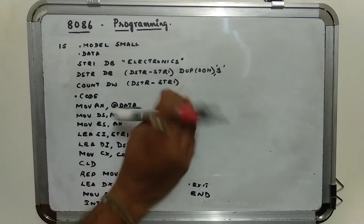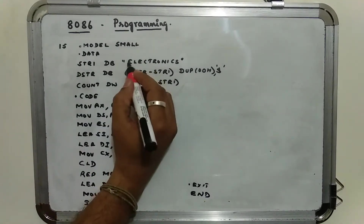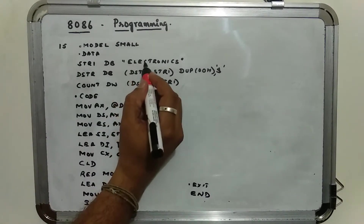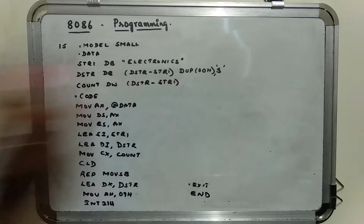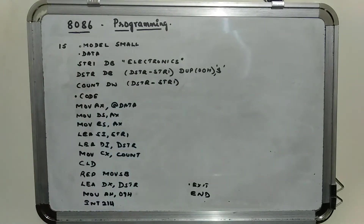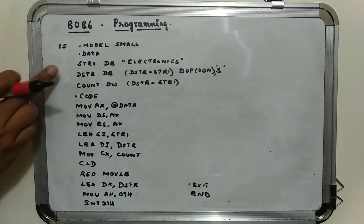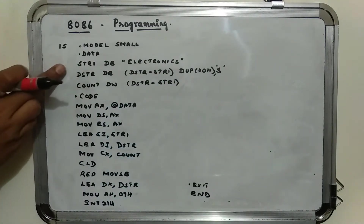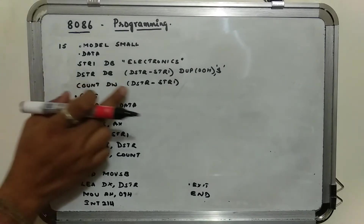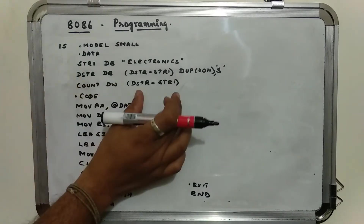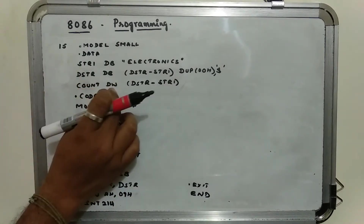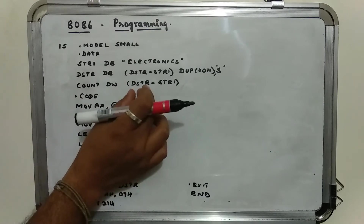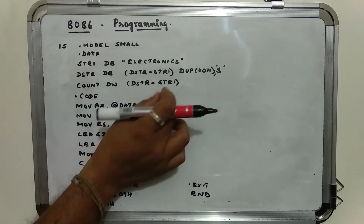As you can see here, 'electronics' has 11 characters. The count is given to be DSTR minus STR1. STR1 is a memory location from which the electronics string is defined. If E is present at some address, say 1000, then the characters follow at 1001, 1002, ... 100A.